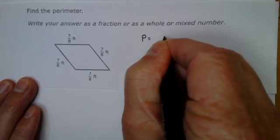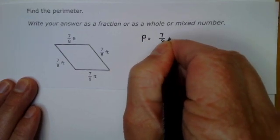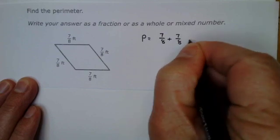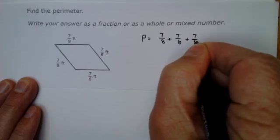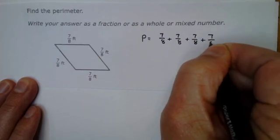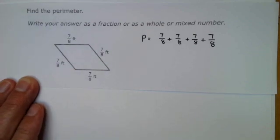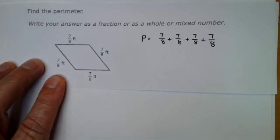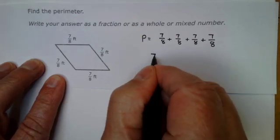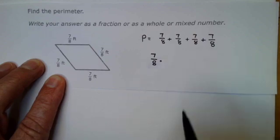To find the perimeter of this, I need to take 7/8 plus 7/8 plus 7/8 plus 7/8 and add them all together. If you remember, a quick way of adding the same number over and over again is to multiply. I can take 7/8 and multiply it by 4.